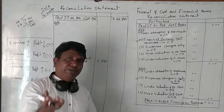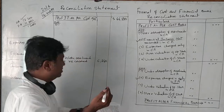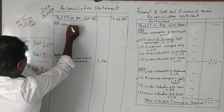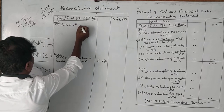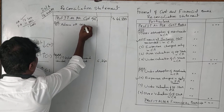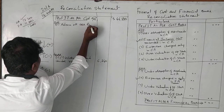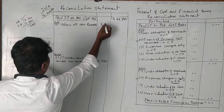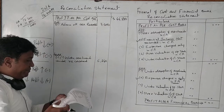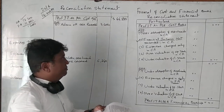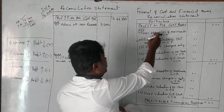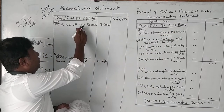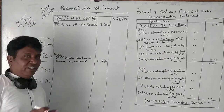Next, administration overhead is recovered in excess, meaning more was recovered. Therefore, administration overhead over-recovered — over-absorption of overheads — should be added: 3,400 rupees.